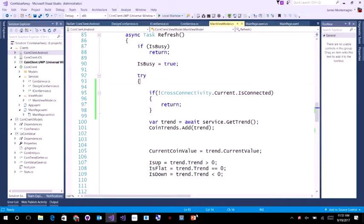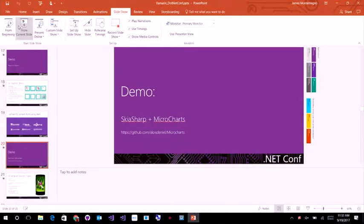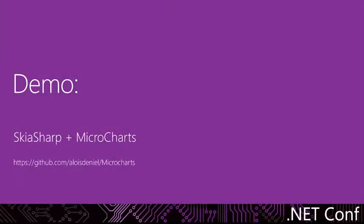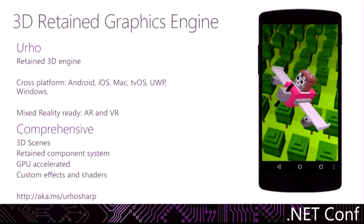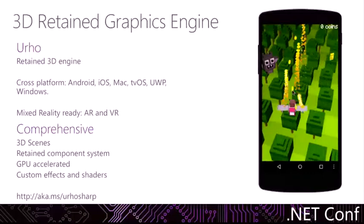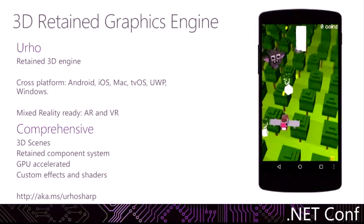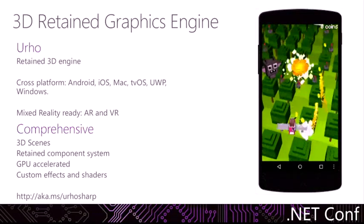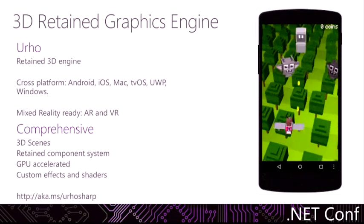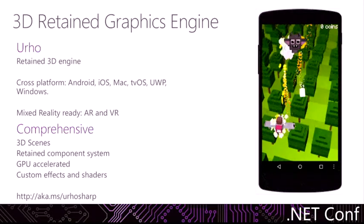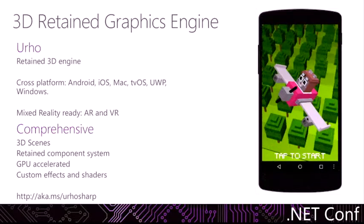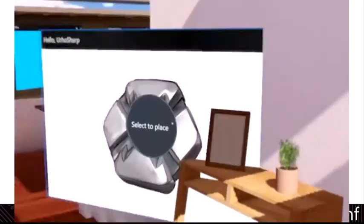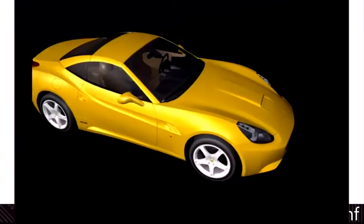So cross-platform 2D graphics are great, but we can even leverage additional libraries with UrhoSharp. UrhoSharp is a 3D retained graphics engine that works across Android, iOS, Mac, tvOS, and it's ready for AR and VR. It does all sorts of amazing things like 3D scenes and game programming. It also does some really cool things like working with the HoloLens automatically from a cross-platform C# API. You can have an actual HoloLens extension, or use the brand new ARKit and VR type features to interact with the physical world.